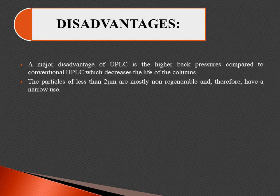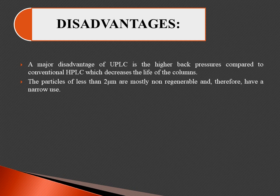The major disadvantage of UPLC is the high back pressure compared with conventional HPLC, which decreases the life of the column. Additionally, particles of less than 2 micrometers in diameter are mostly non-porous and therefore have a narrow range of use compared to HPLC.